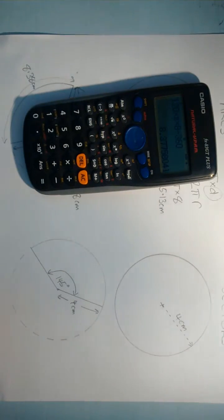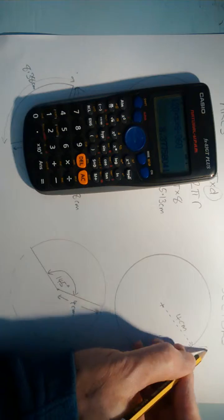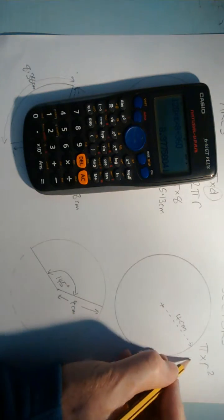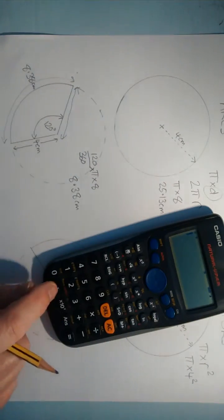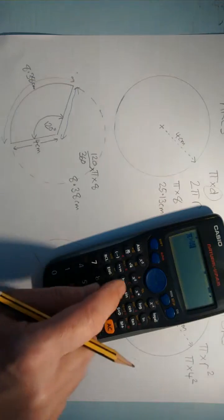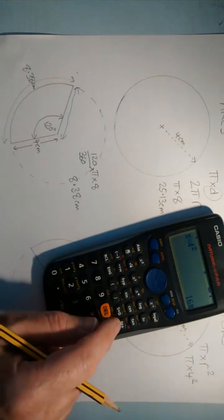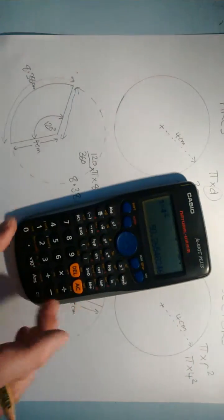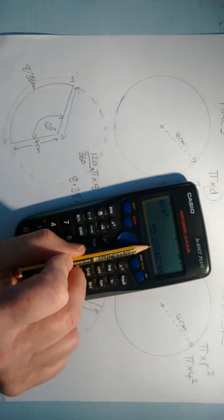So over to areas of sectors. Well, the area of a circle would be pi times the radius squared. So in this case, it's going to be pi times 4 squared. So we can do that on our calculator. Pi times 4 squared is equal to 16 pi. So if you leave it in third form, that's the most accurate way of leaving it. But if we want to convert that into decimals, to two decimal places, 50.27.